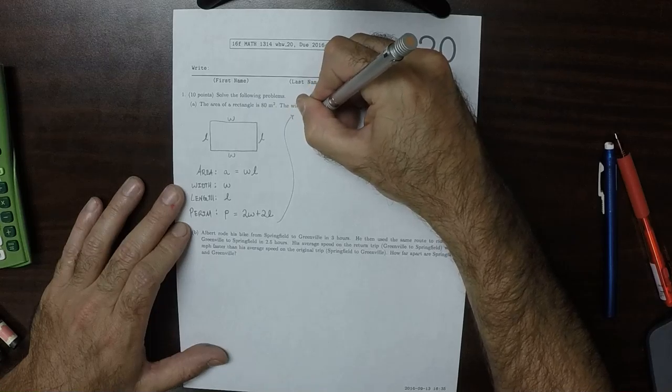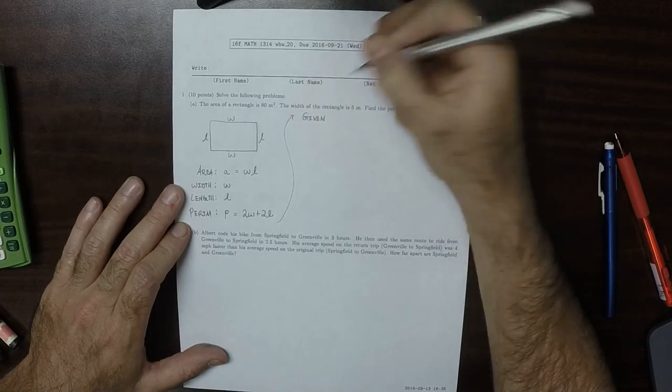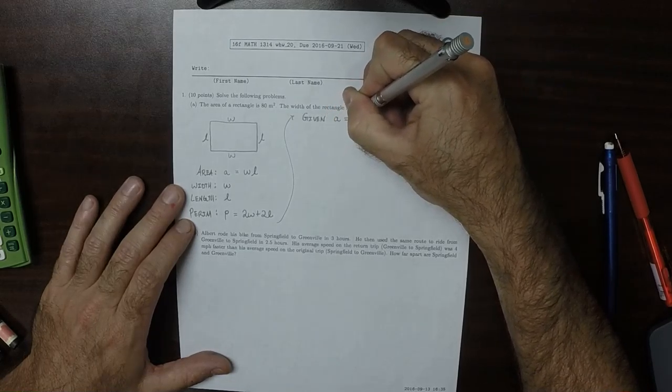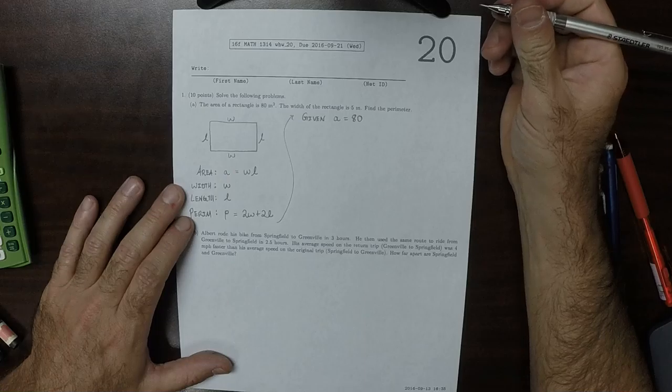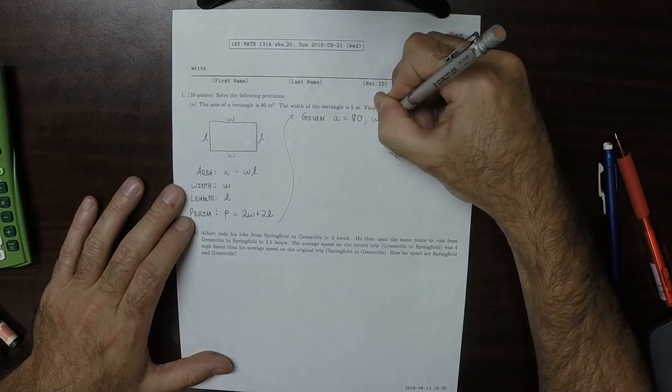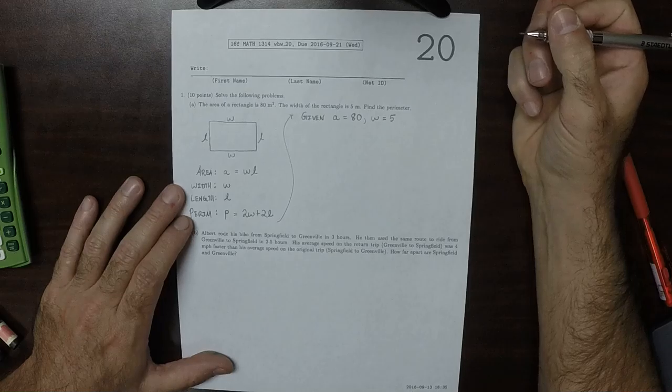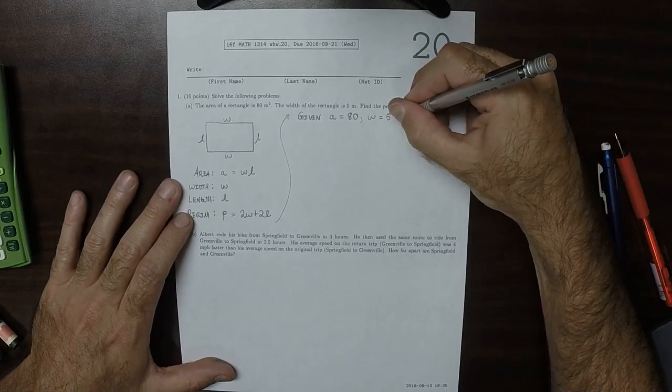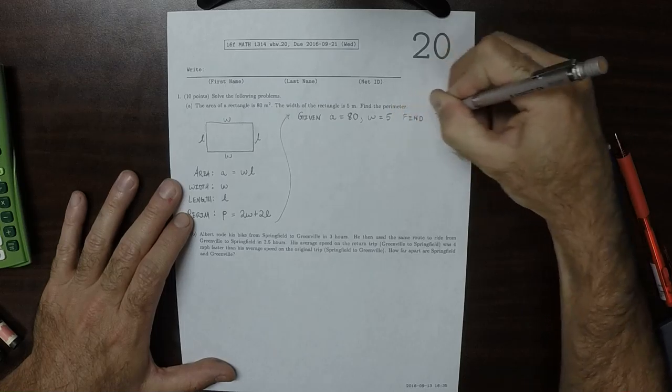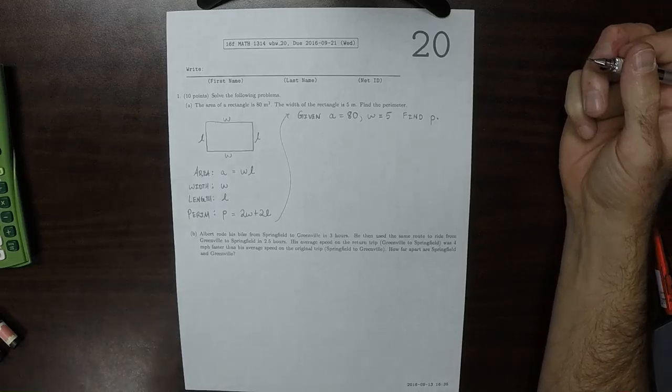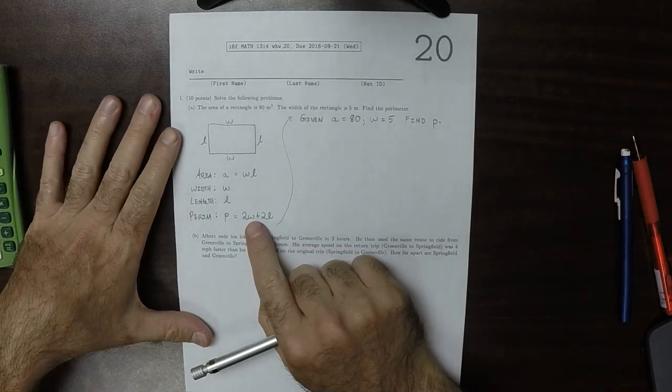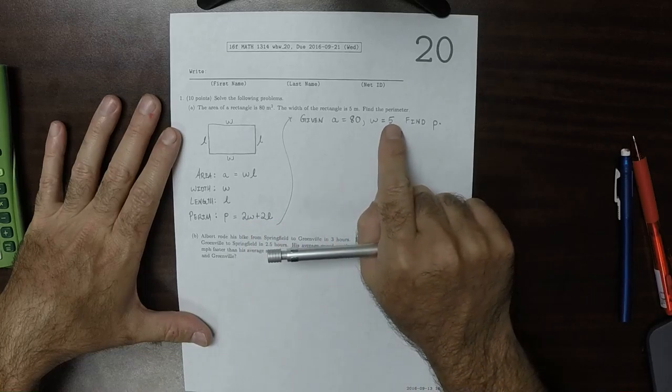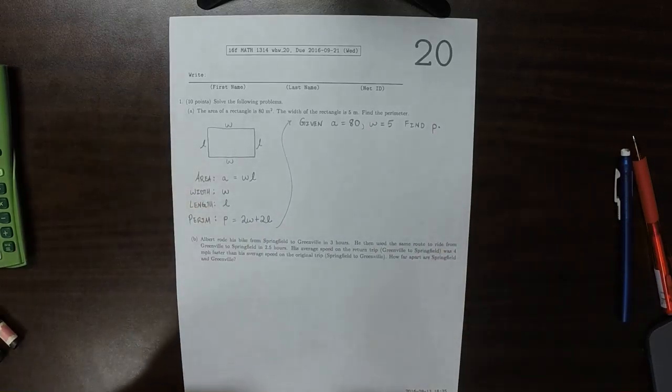We are given, besides that setup, that the area is 80, and that W is 5, and we are requested to find the perimeter. So I'll find P. To evaluate P, we'll need W and L. Now we're given W. Nowhere in the story are we given L.